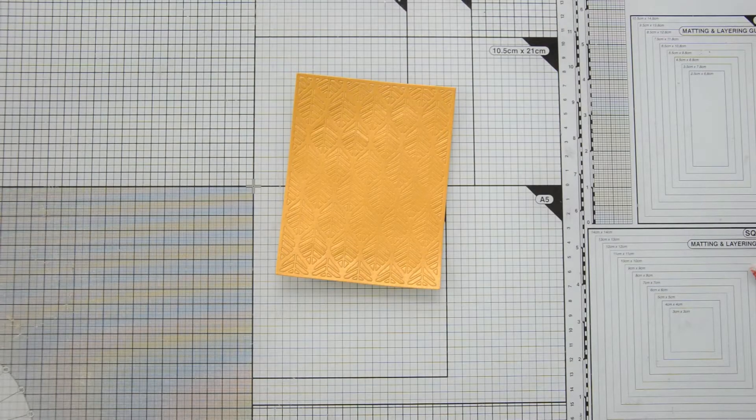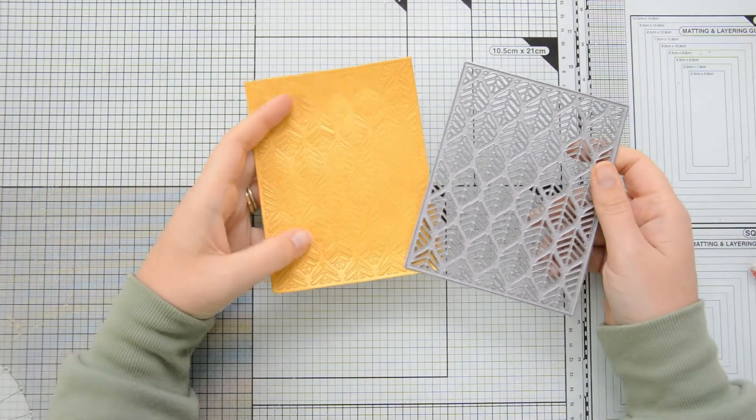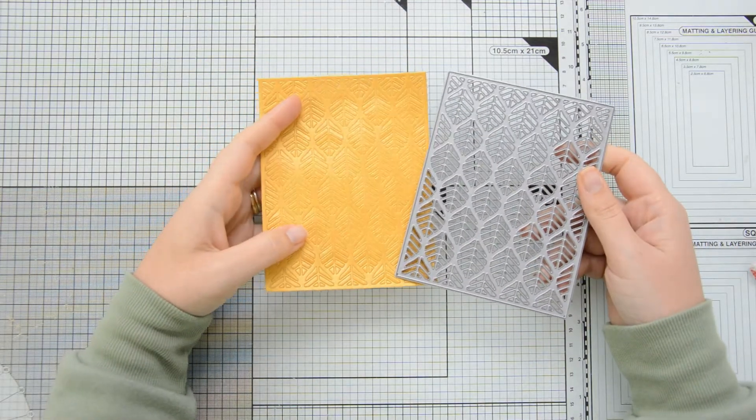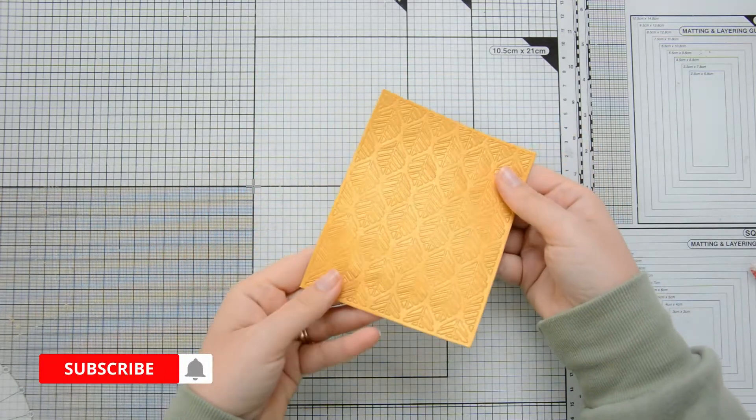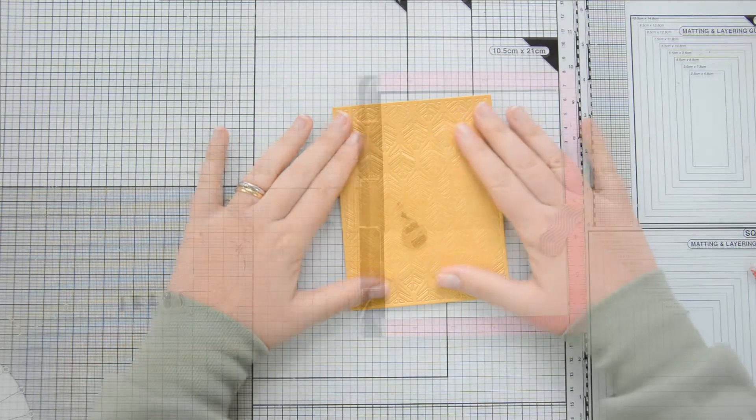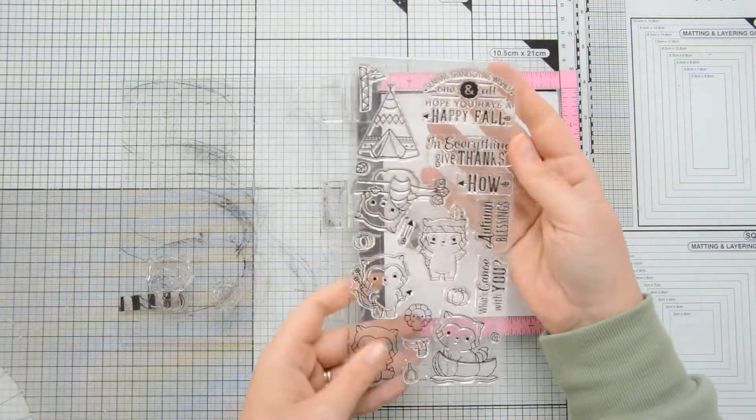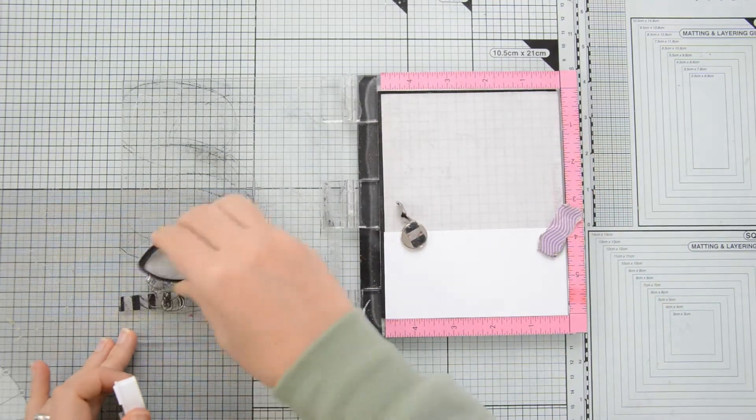As a first step, I used the Leaf Cover Plate Die by Sugar Pea Designs to dry emboss some cardstock. This is some light yellow cardstock which has a pearlescent finish, and while you normally would use this Cover Plate Die to die cut cardstock, you can also use it to dry emboss it if you use one of those embossing mats in your die cutting machine.